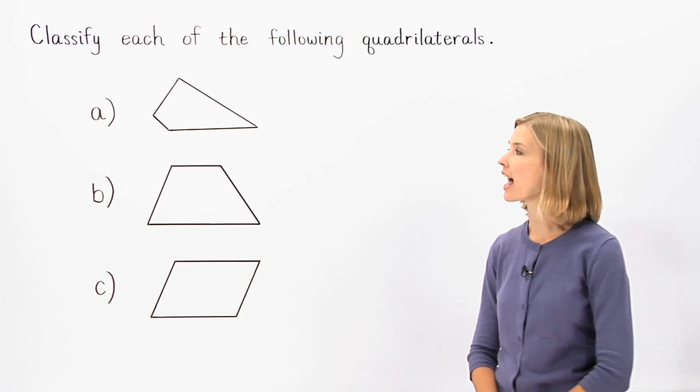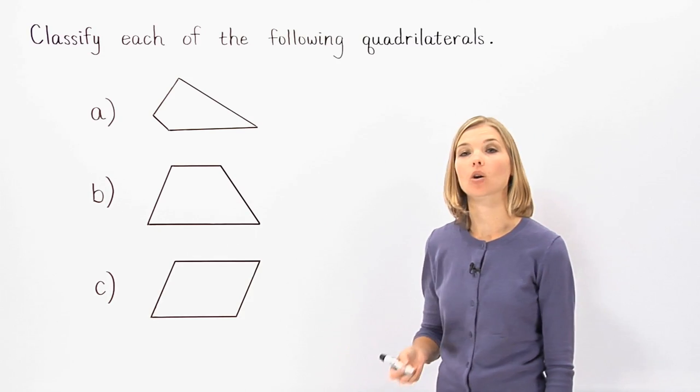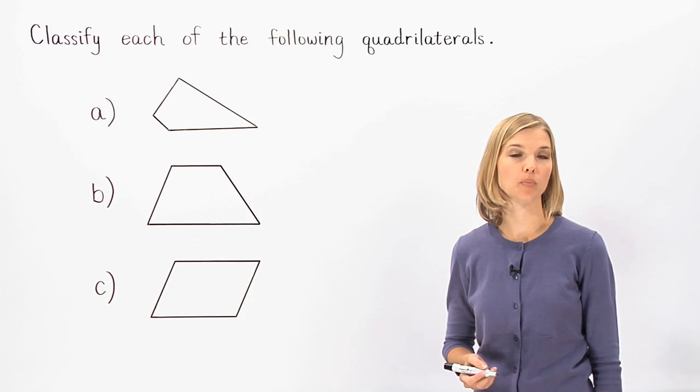Here, we're asked to classify each of the following quadrilaterals. Remember that a quadrilateral is a four-sided polygon.